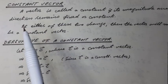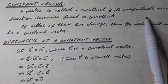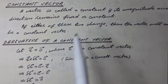Constant vector. A vector is called a constant if its magnitude and direction remains fixed or constant.